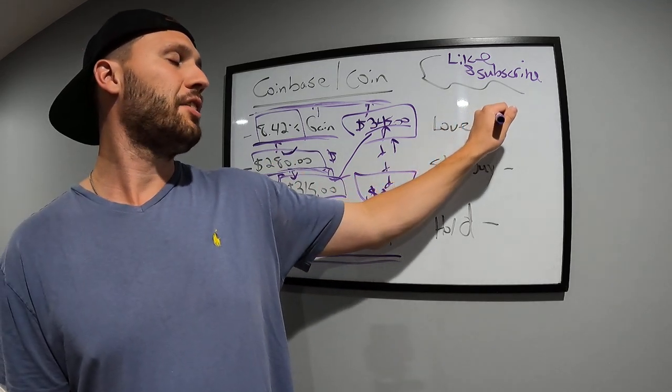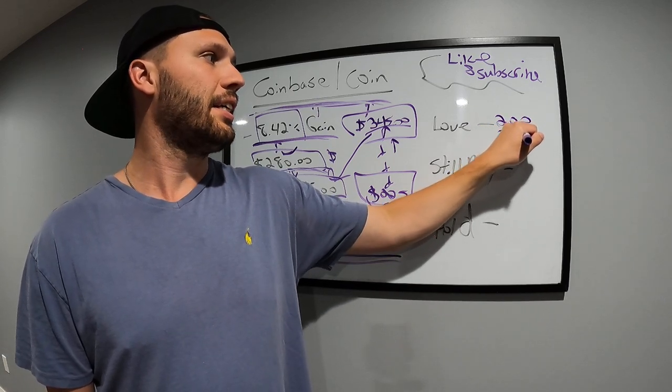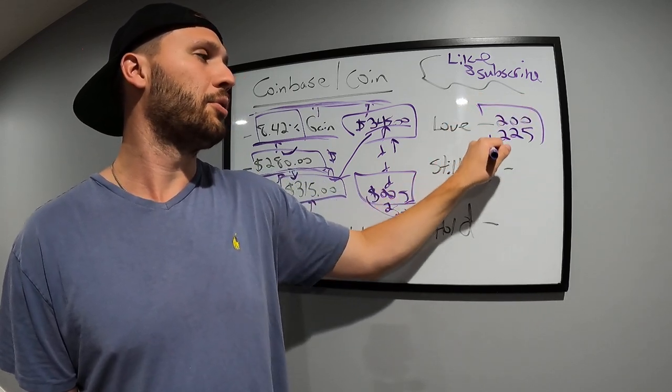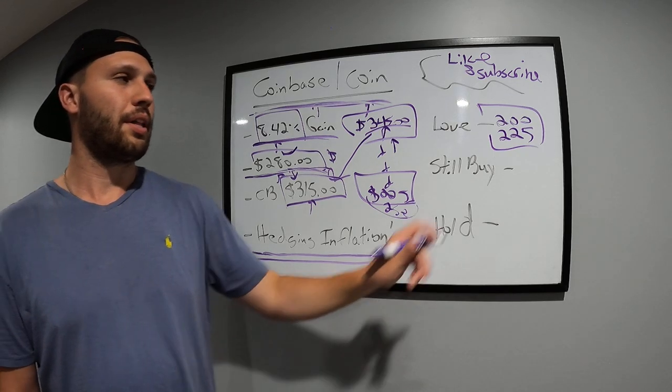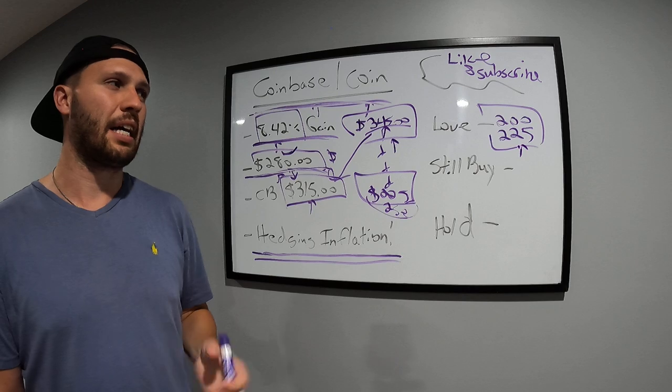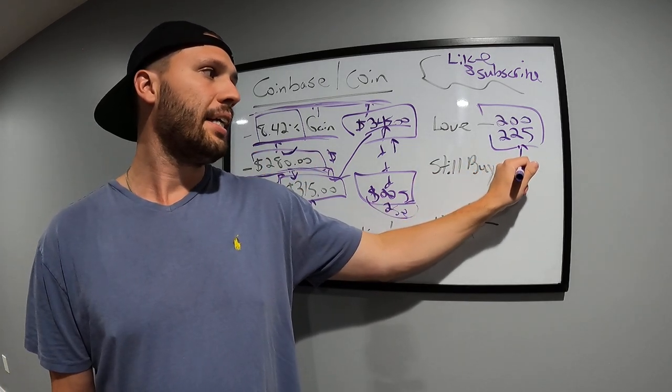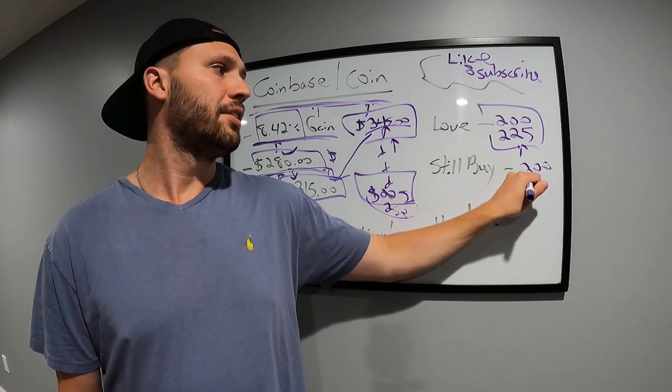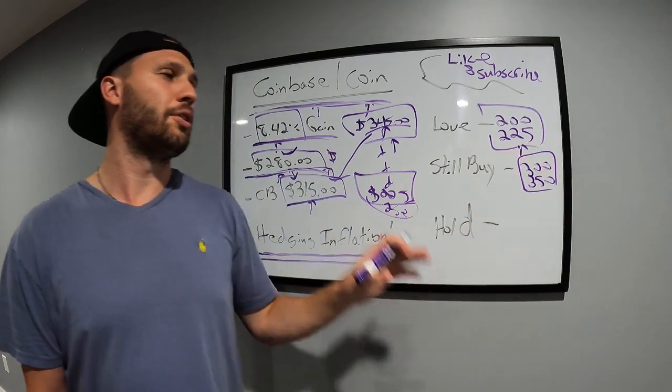So this company long term, as long as they execute right, they're going to be a monster. Where do I love this stock? Obviously like $200 to $225. I think $200 would be like the lowest it will ever go unless like crypto totally goes away, which I don't think is going to happen. So that is like the money buy. If it does go back down to $225, I probably will buy a little bit more. If it doesn't, I'm fine with where I'm at right now. Where I would still buy, I think $300 to $350 is good, but this all depends on what the market's doing.